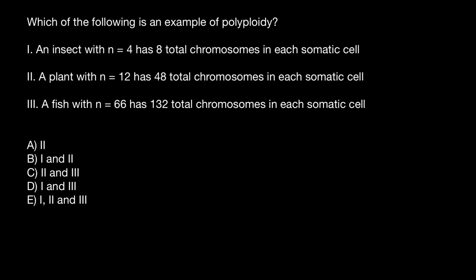So let's review again what is the ploidy, polyploidy, haploidy, diploidy, and so on. First variant: an insect with n equals 4 has 8 total chromosomes in each somatic cell. So n, 2n, 3n, and 4n.